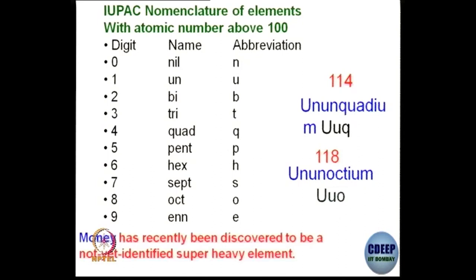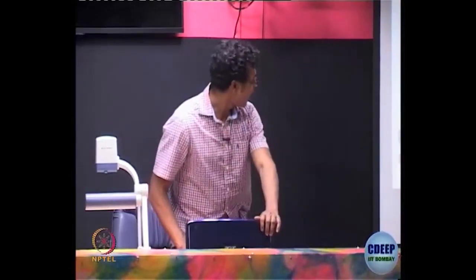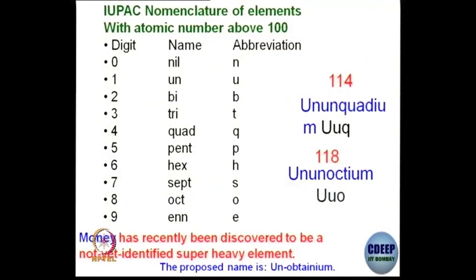Here is a small homework for you. Suppose money has recently been discovered as a not-yet-identified super-heavy element. What would be its IUPAC nomenclature? Simply, the IUPAC nomenclature you could call it 'unobtainium' — money, the proposed name for this, should be unobtainium.